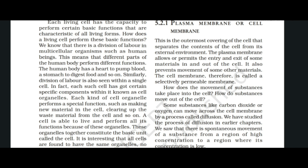Some substances like carbon dioxide or oxygen can move across the cell membrane by a process called diffusion. Diffusion is the spontaneous movement of a substance from a region of high concentration to a region where its concentration is low.